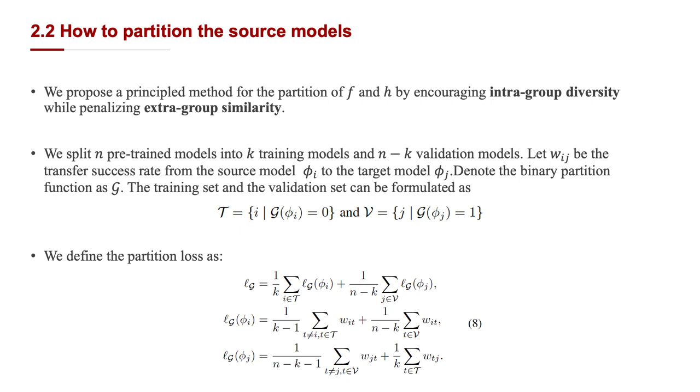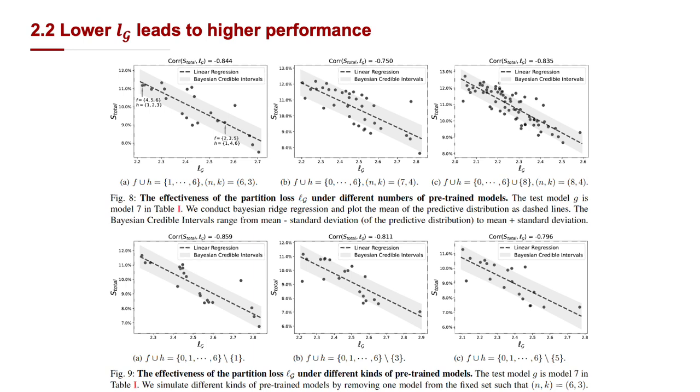Empirically, we find that the proposed partition loss negatively correlates with the average total score. We conduct linear regression for the scatter plot between the partition loss and the average total score. Each point here is one kind of partition, and the partition loss negatively correlates with the average total score. The average correlation across different settings between them is around 80%.